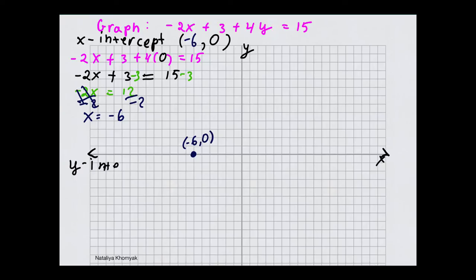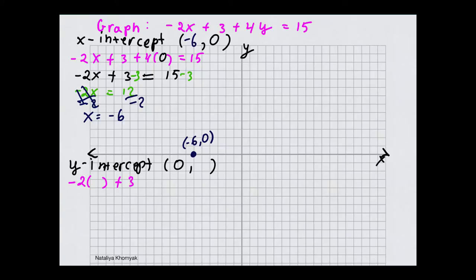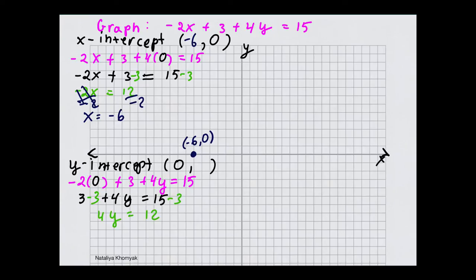The y-intercept happens when x is equal to 0. So let's calculate y. We take our equation: negative 2x plus 3 plus 4y equals 15. We plug in 0 for x, so we have 3 plus 4y equals 15. Subtracting 3 from both sides gives 4y equals 12. Dividing by 4, y is equal to 3. So the second intercept is (0, 3).